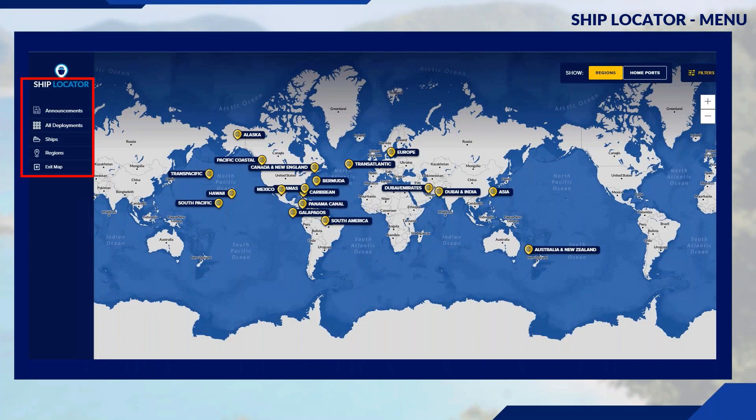Now you're looking at the map overview. To the left-hand side of the screen, highlighted in the red box, is the menu pane. This displays additional information such as announcements, the list of deployments, and the ability to search by ships and regions. Clicking on Exit Map will close out the entire page, so be careful, but if that happens it's easy to get back in.